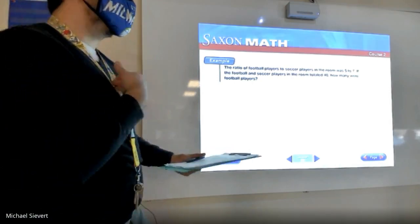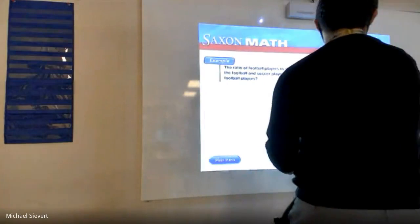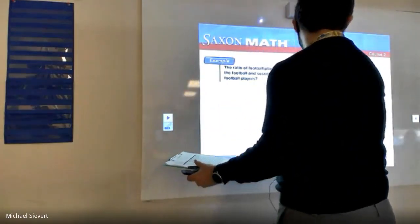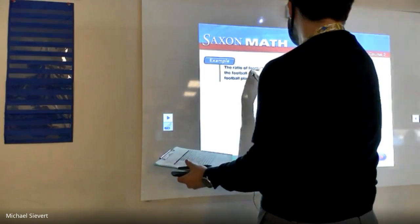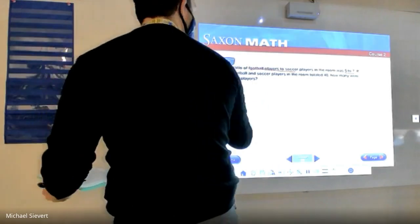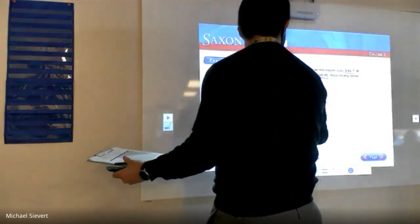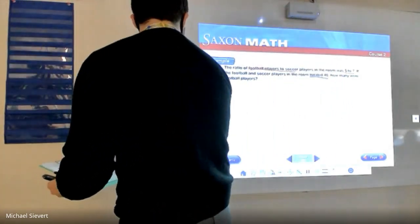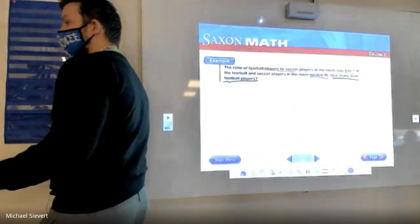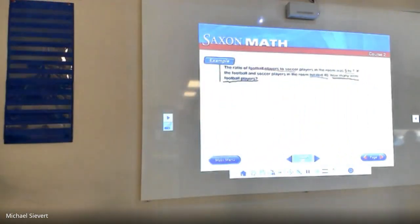First thing I like to do when I read a word problem, I like to identify all the numbers. So we're going to have football players to soccer players is 5 to 7 and we know the total is 48 and we're looking for how many football players. So that's all the information from our word problem we really need to focus on.